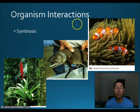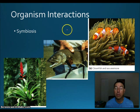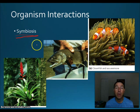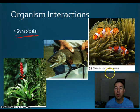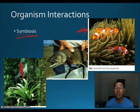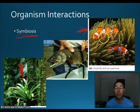When organisms in an ecosystem interact with each other, some of those very close interactions are called symbiosis. One main type is mutualism, where two organisms help each other. The classic example is the clownfish and the anemone: the clownfish gets protection from the anemone's stinging cells, and the clownfish will dart out to grab food items and bring them to the anemone tentacles. Both organisms help each other in their survivorship.